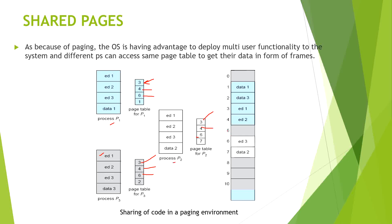On frame number 6 we are having ed3, and ed3 is being called by all the processes. So we need not give different frames for it. Using the shared pages technique, we avoid duplicating that resource across processes.